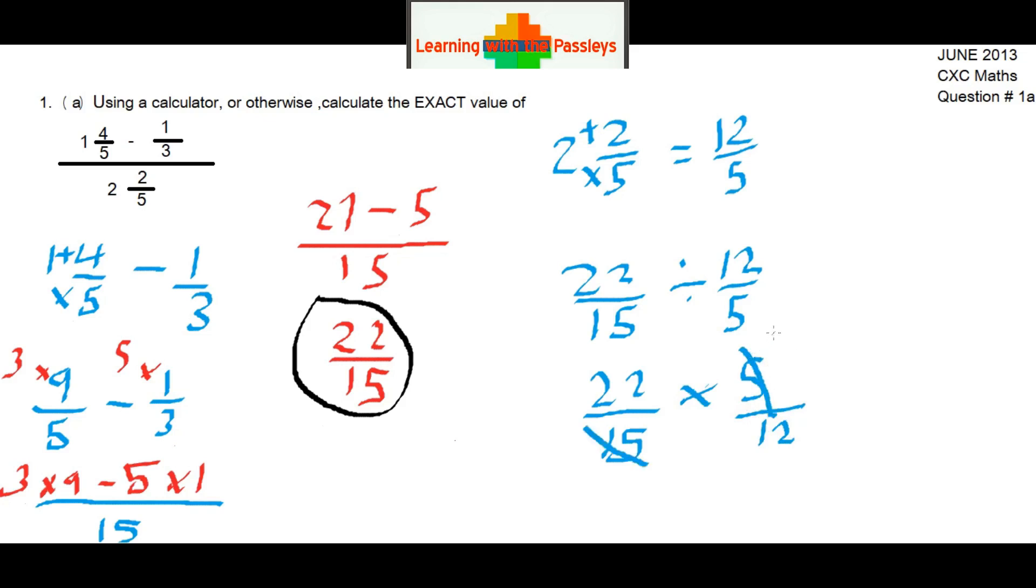5 into itself goes 1 time. 5 into 15 goes 3 times. 2 into 12 goes 6 times, and 2 into 22 goes 11 times. Now we can multiply across: 11 times 1 gives us 11, and 3 times 6 is 18. Therefore, 11/18 is our final answer.